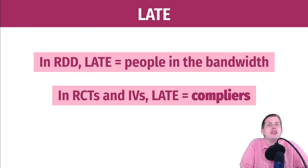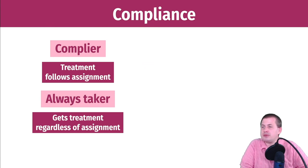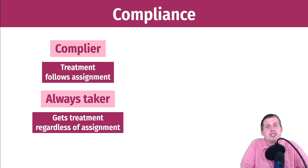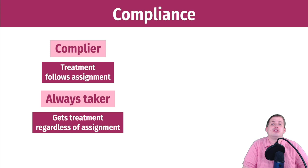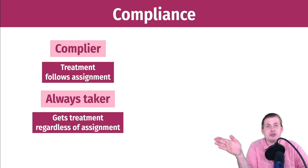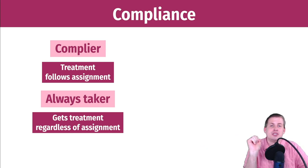Compliance is a special principle in causal inference dealing with what people do if they're assigned to a treatment. Compliers: if assigned to the treatment group they will do the treatment; if assigned to control, they won't. Always takers will get the treatment regardless of assignment — for example, in a bed net program, someone in the control group who goes out and buys their own bed net is an always taker.